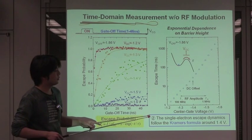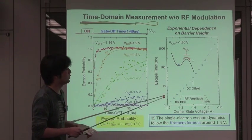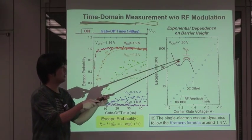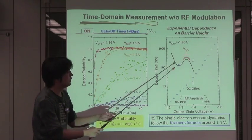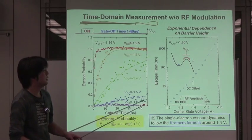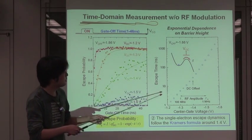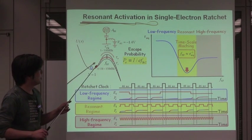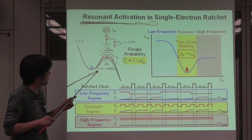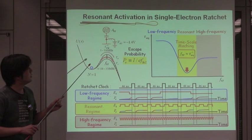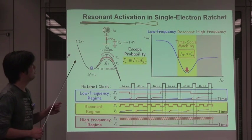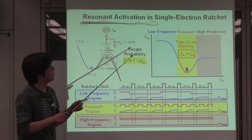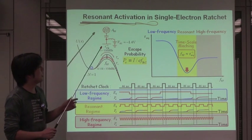This indicates the single electron escape dynamics follow the Kramers formula around minus 1.4 volts. In order to form a dichotomously oscillating barrier, the voltage applied to the right side gate is modulated at the center of minus 1.4. Effectively, the escape time is in the order of 1 to 100 MHz. When the RF frequency is scanned within the range from 0.15 to 150 MHz, we can expect the resonant activation, and then the average escape time takes a minimum, and the single electron escape can be resonantly accelerated.